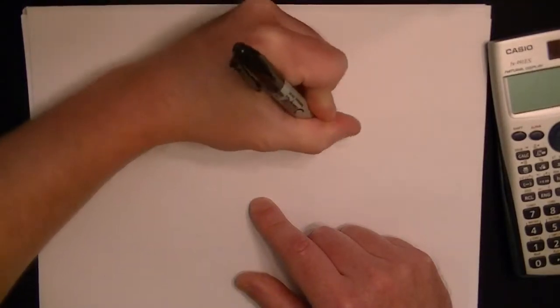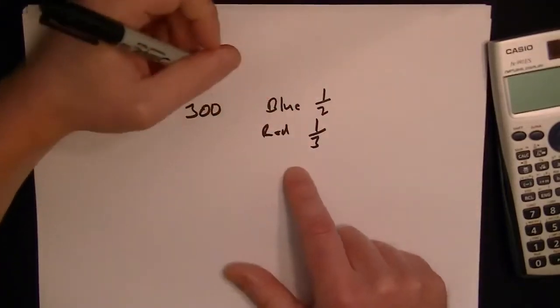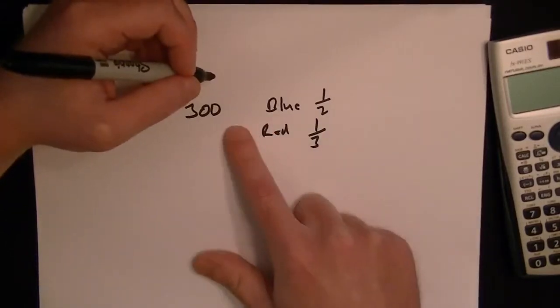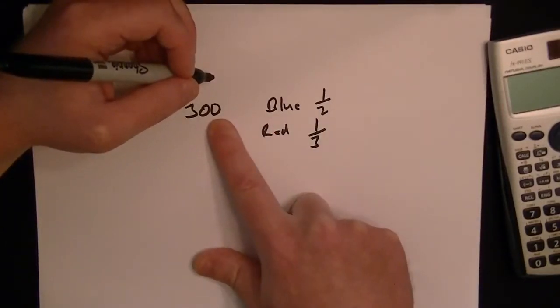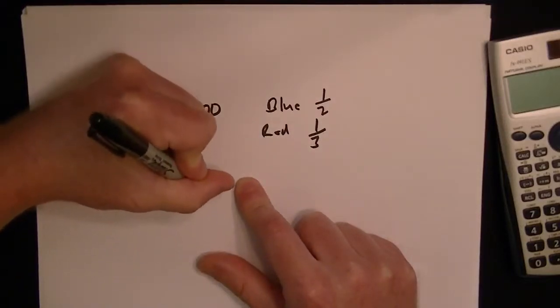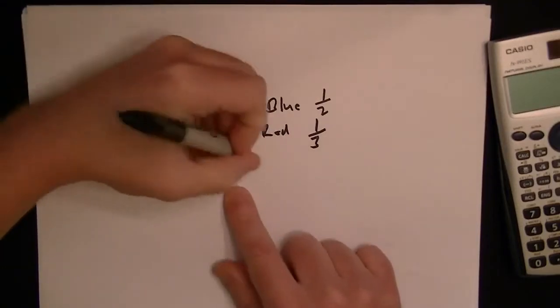by one-third. They ask how many people selected yellow. If half of the 300 selected blue, we can work that out as 300 times one-half, which is going to give us